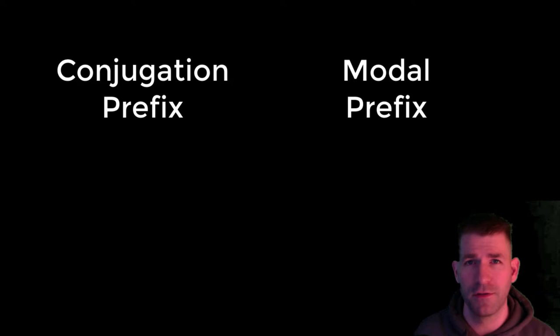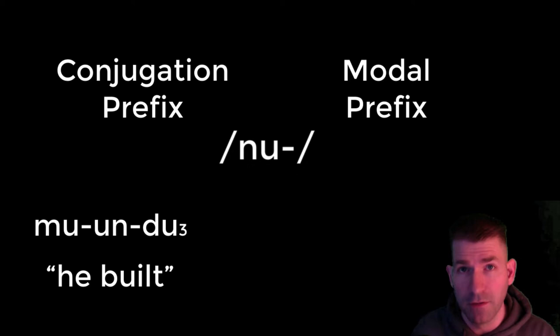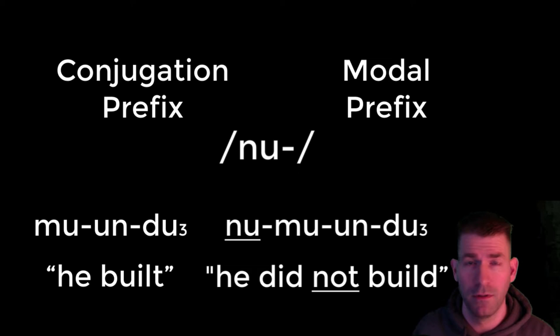Modal prefixes, however, will affect the verb itself. For example, the modal prefix nu negates the verb. If mu-n-du₃ means 'he built,' then nu-mu-n-du₃ means 'he did not build.'